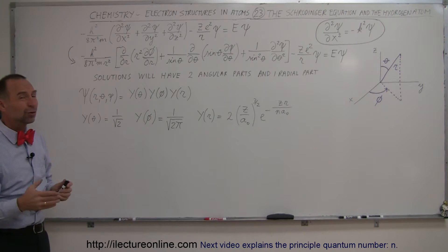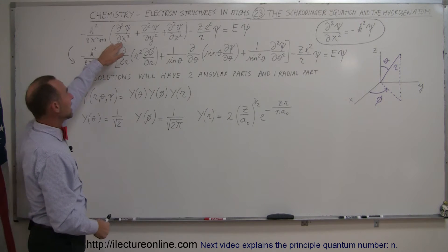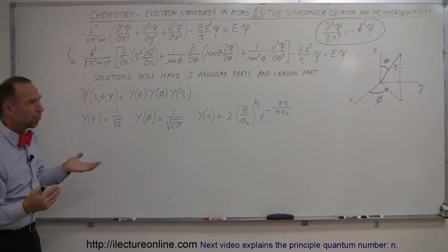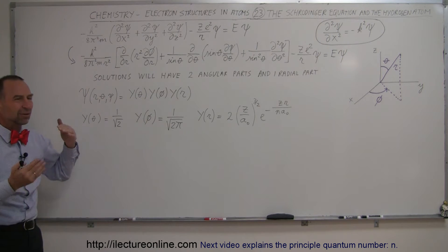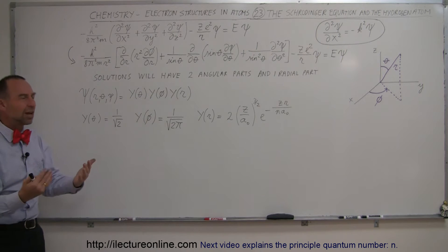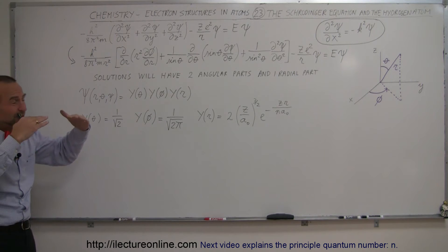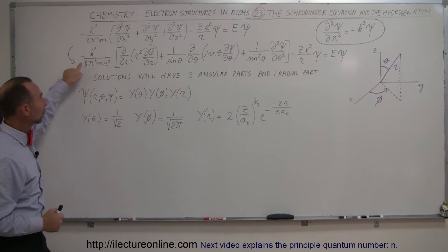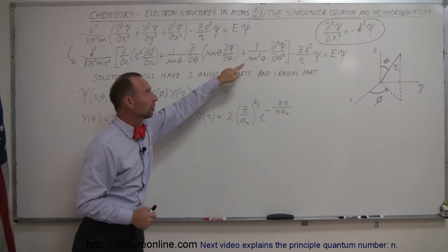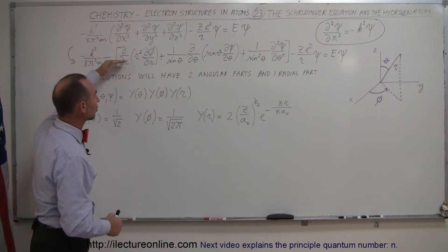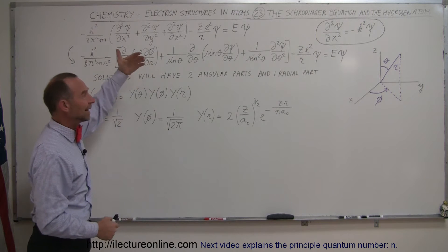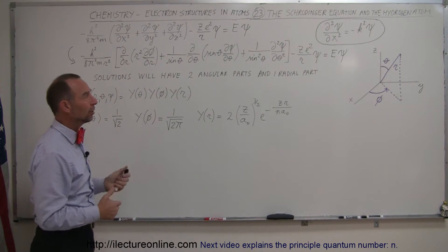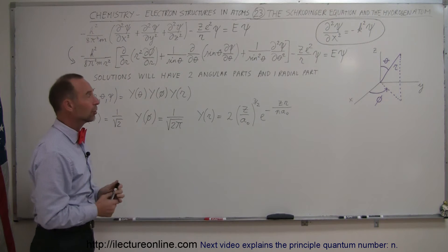This is what we call the three-dimensional Schrödinger equation defining the existence or the movement of an electron. Now, remember that this would be in x, y, z coordinates. But x, y, z doesn't work very well because that's a box-like shape, and atoms aren't boxes — they're spheres. So therefore, we have to convert this equation to a spherical equation. This is now the Schrödinger equation defining the motion of an electron in the orbit around the nucleus of an atom.